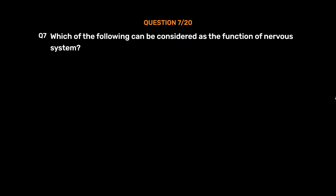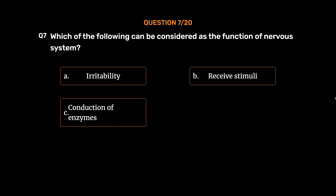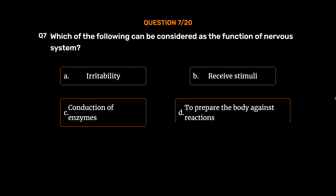Question number 7. Which of the following can be considered as the function of nervous system? Option A: Irritability. Option B: Receive stimuli. Option C: Conduction of enzymes. Option D: To prepare the body against reactions. The correct answer is Option B: Receive stimuli.